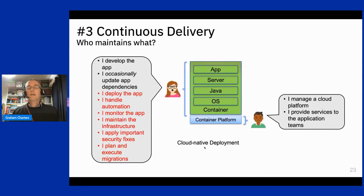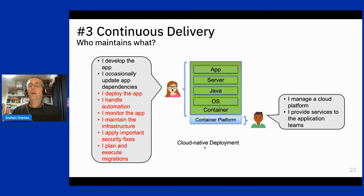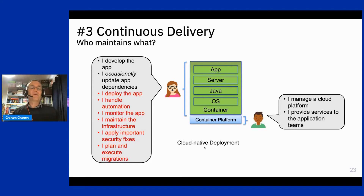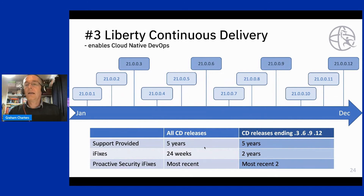However, when we move to a more cloud-native approach, the operations team shifts to become responsible for a cloud platform — essentially maybe OpenShift — and provides services to application teams. A lot of responsibilities that ops teams had for individual applications shifts over to the development team, who become a multidisciplinary team responsible for deploying the app, handling automation, monitoring, maintaining infrastructure, applying security fixes, and planning and executing migrations. And typically, development teams like to write new code — so how do we help them maintain security integrity without building up technical debt?